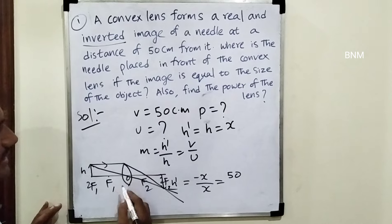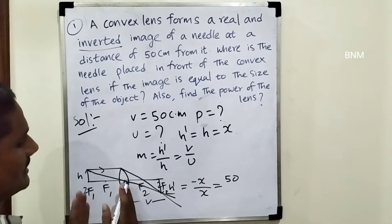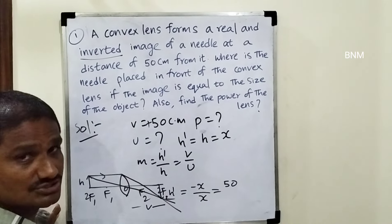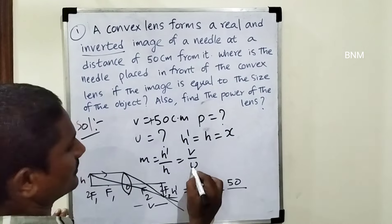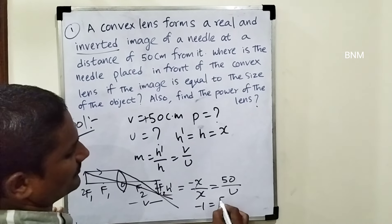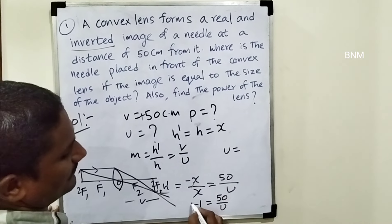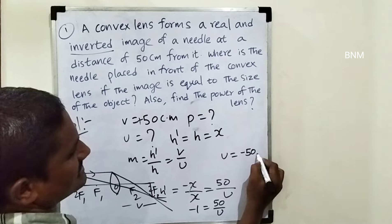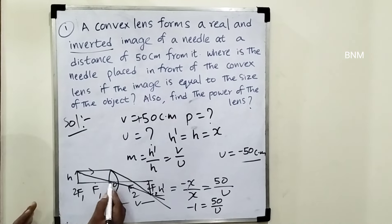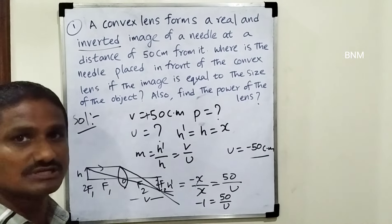V is on the right side, so the image distance is positive — right side. By sign convention, minus 1 is equal to 50 by u. So u is equal to minus 50 centimeters. Why minus? Because it is on the left side. U is equal to minus 50 centimeters.